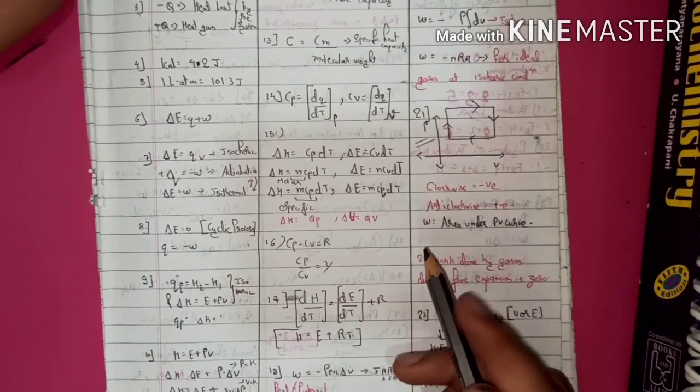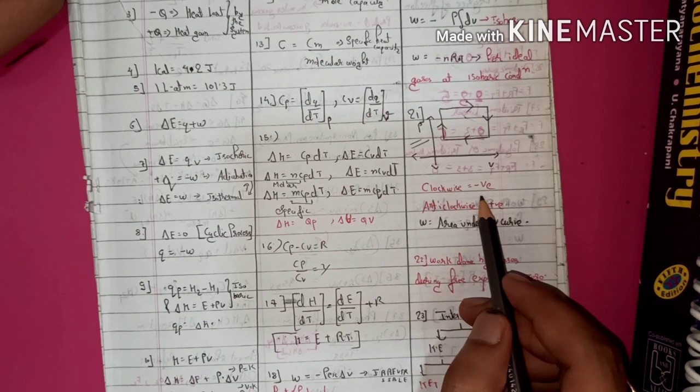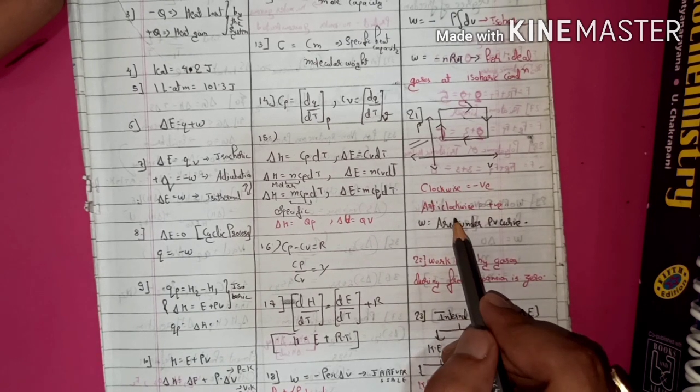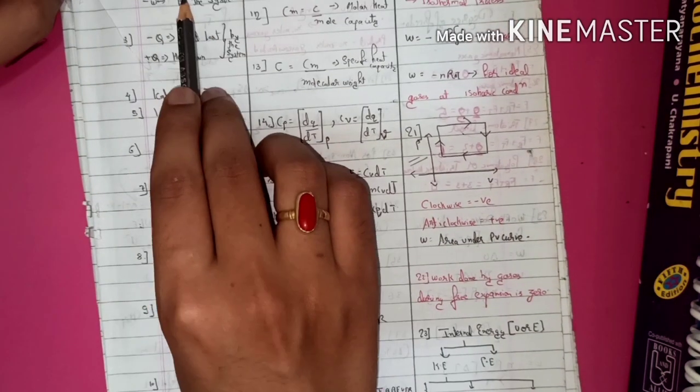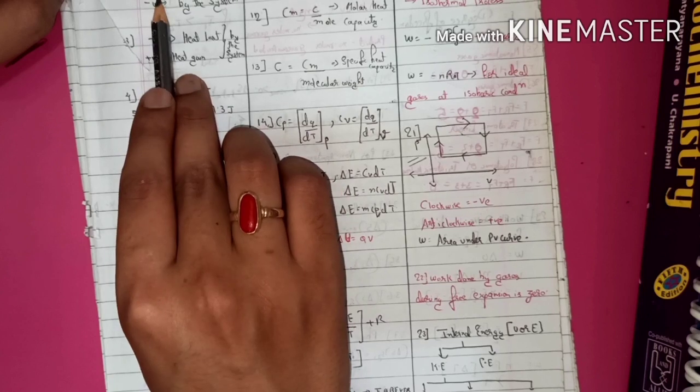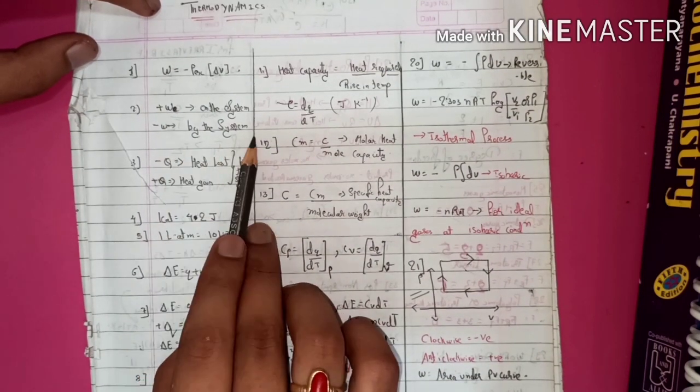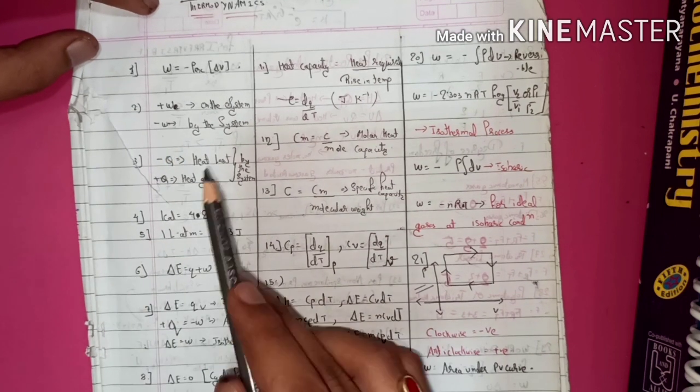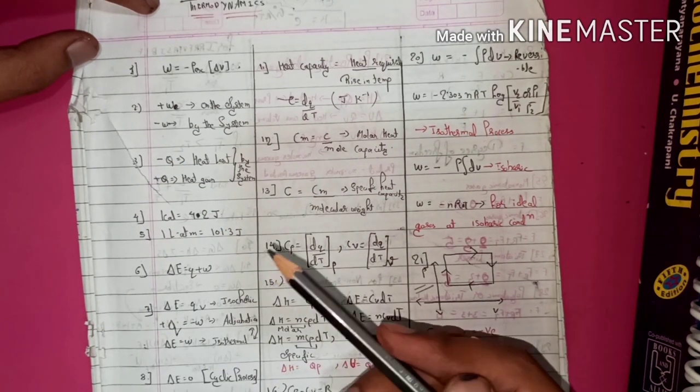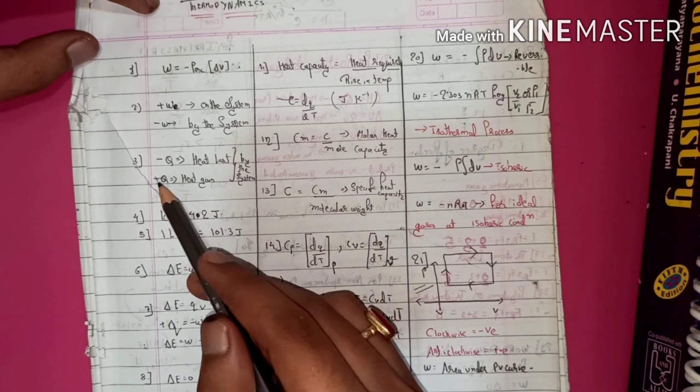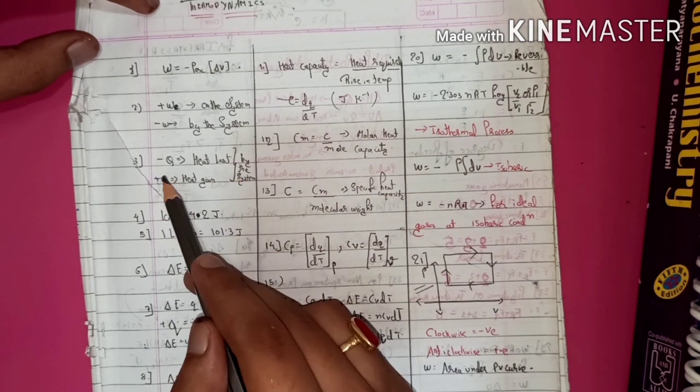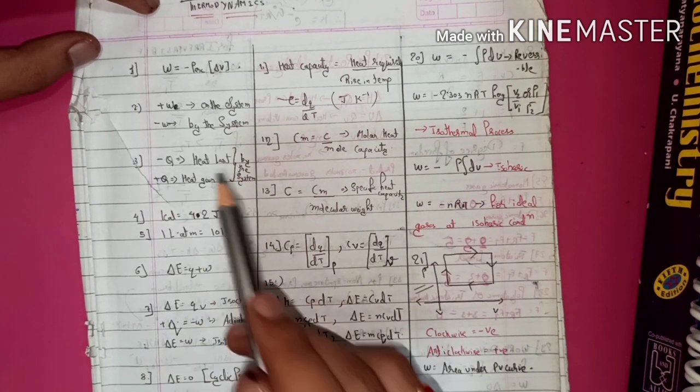Now, there are many conventions of work done, like clockwise work done is negative, anti-clockwise work done is positive, work done on the system is positive and work done by the system is negative. In that way, there are many conventions, like heat loss is negative and heat gain is positive.